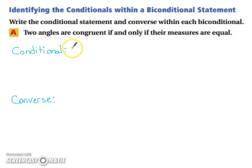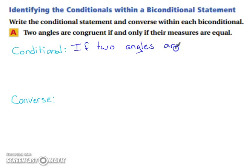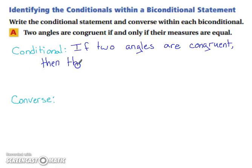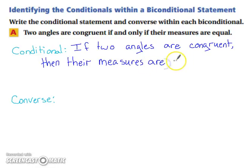For our conditional, we simply want an if-then statement. If two angles are congruent, then their measures are equal.